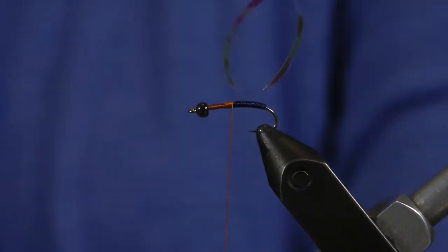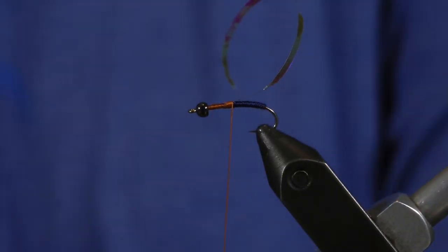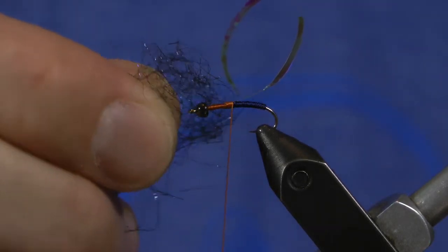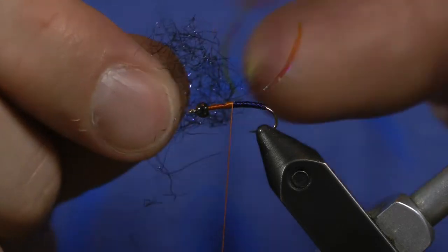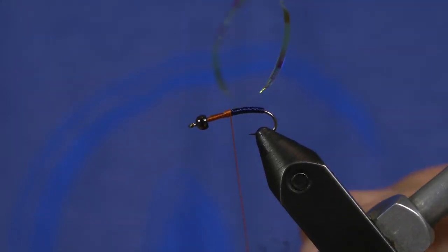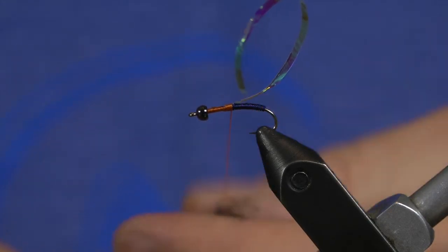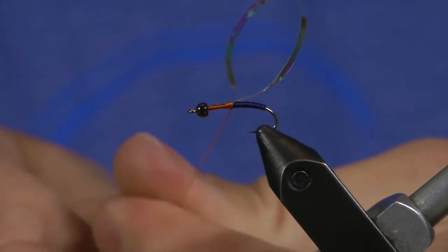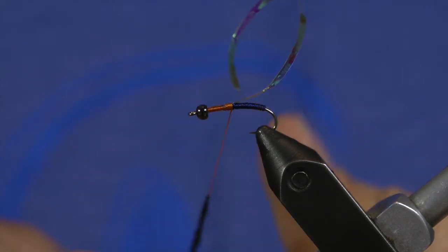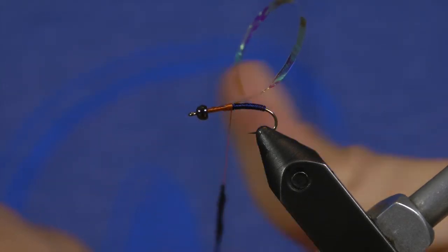Once that's on board, I'm going to take a dark UV dubbing. You can see just a little bit of UV flash here with this specific dubbing, and I try to get it on there really tight. I don't want this to be buggy and stick out everywhere; I want it to be super tight.